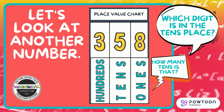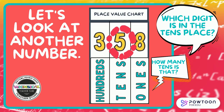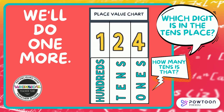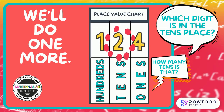Let's look at another number. Which digit is in the tens place? How many tens is that? Five tens is worth 50. We'll do one more. Which digit is in the tens place? How many tens is that? Did you say that there's a two in the tens place? And it's worth two tens? Two tens is equal to 20.